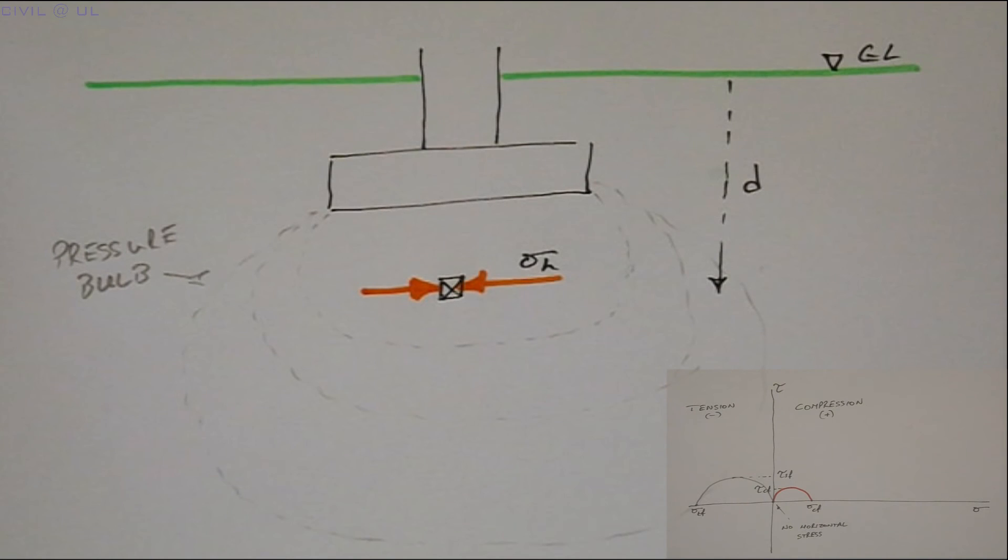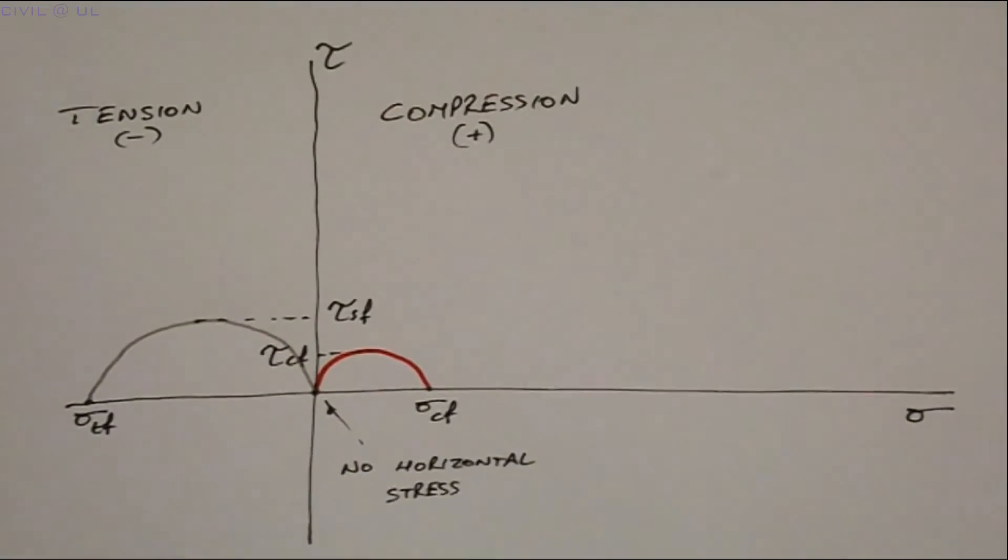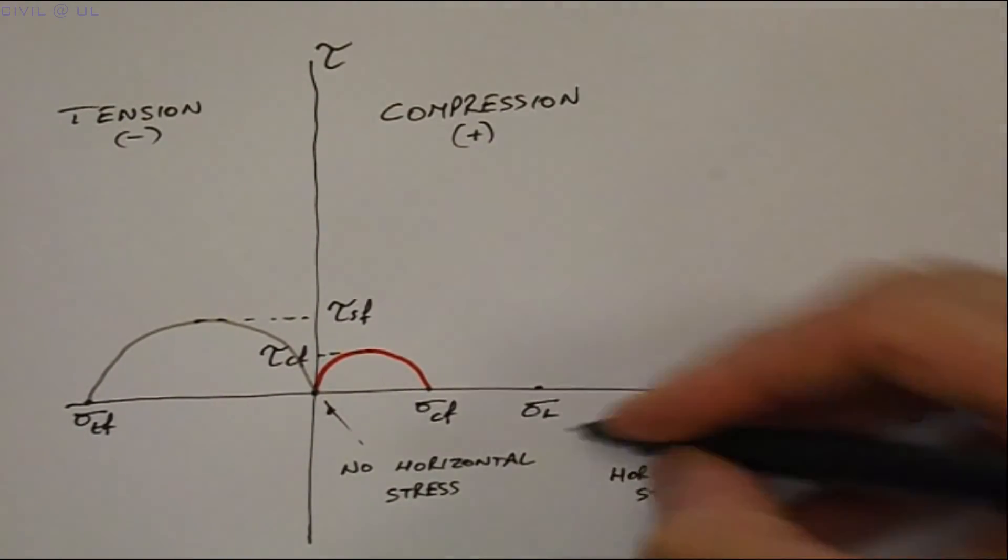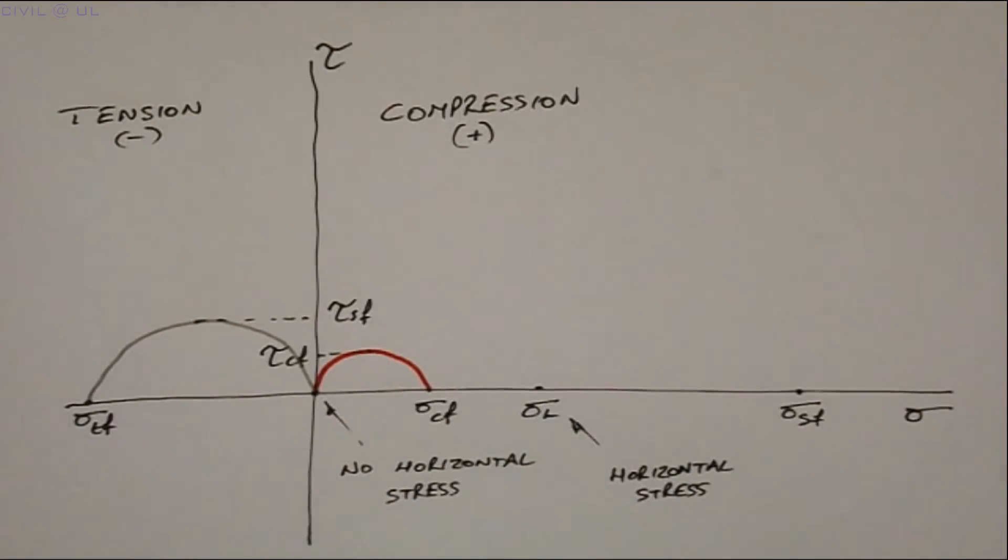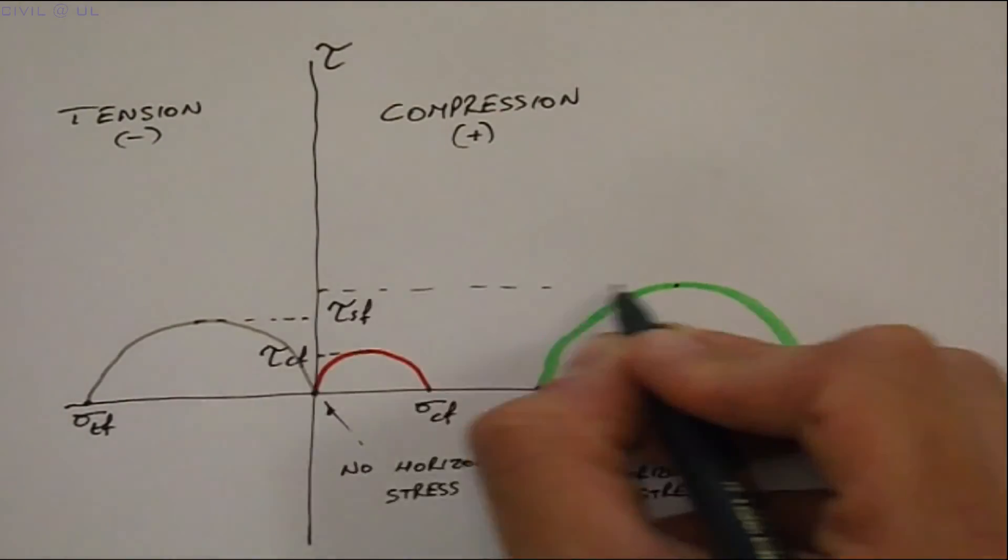The specimen is then subjected to an increasing vertical stress until it fails. The resulting Mohr's circle plots like this, with the shear stress at failure equal to tau s.